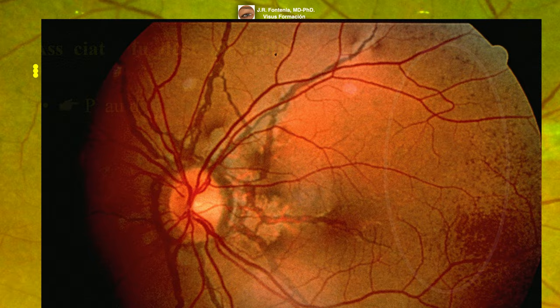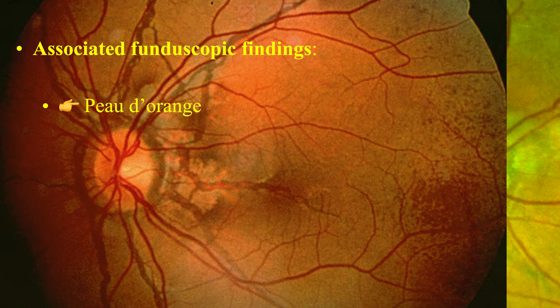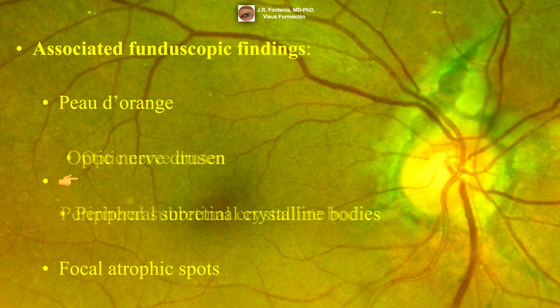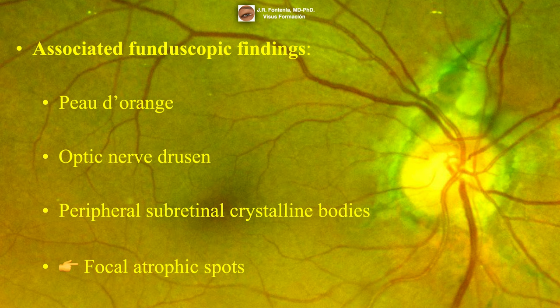Associated ophthalmoscopic findings may include an orange skin pattern, which is a diffuse mottling of the retinal pigment epithelium usually located in the temporal mid-periphery, as well as optic nerve drusen, peripheral subretinal crystalline bodies, and focal atrophic spots.